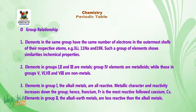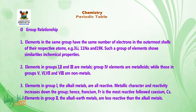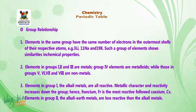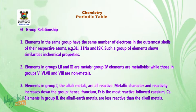Now let us look at group relationship. Number 1: elements in the same group have the same number of electrons in the outermost shells of their respective atoms. For example, lithium, sodium, and potassium are in group 1, and they have one valence electron in their outermost shell. Such a group of elements shows similarities in chemical properties.